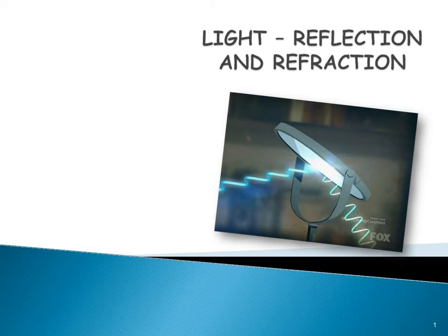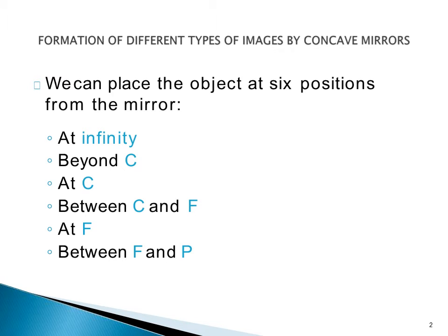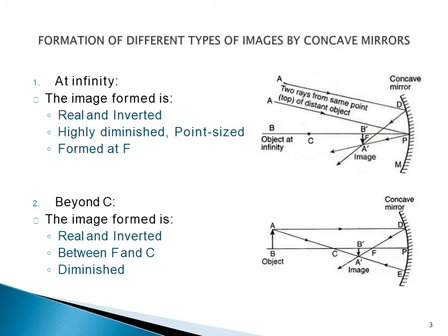A very warm welcome to today's physics class. Today we will be talking about the different image formation by concave and convex mirrors, by faculty of science at Lotus Petal Foundation. We can place the object at six different positions from the mirror: at infinity, beyond center of curvature (C), at C, between C and focus, at focus, and between pole and the focus of the mirror.